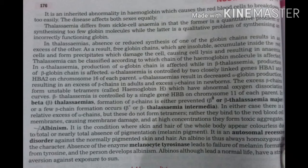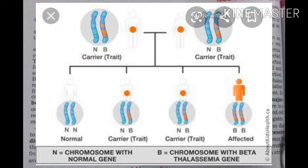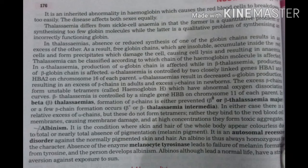Beta thalassemia is controlled by a single gene, HbB, on chromosome number 11 of each parent. In beta thalassemia, there is a relative excess of alpha chains, but these do not form tetramers — alpha thalassemia में tetramers बनता है लेकिन beta thalassemia में tetramers का formation नहीं होता है। Instead, they bind to the red blood cell membrane causing membrane damage, and at high concentration they form toxic aggregates.